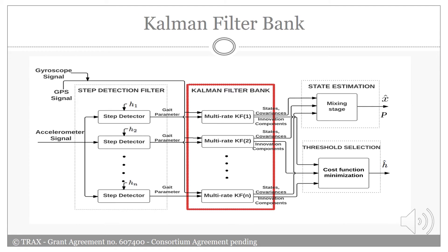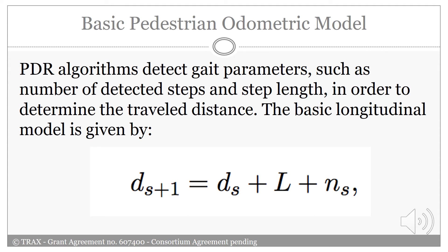Now I'm gonna present the basic pedestrian odometric model. Pedestrian dead-reckoning algorithms detect gate parameters such as number of detected steps and step lengths in order to determine the travel distance. The basic pedestrian odometric model is given by this formula. D stands for total travel distance, S stands for step index, L is step length, and N here is the noise.